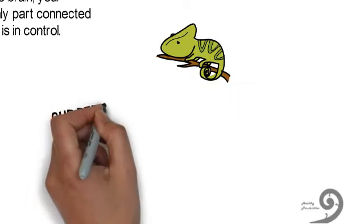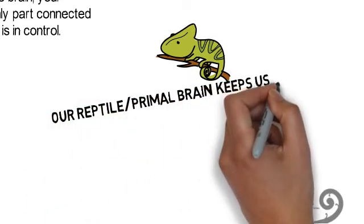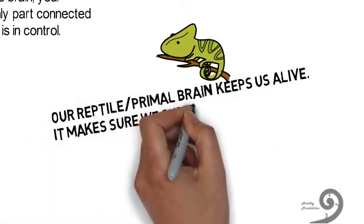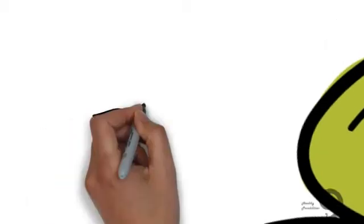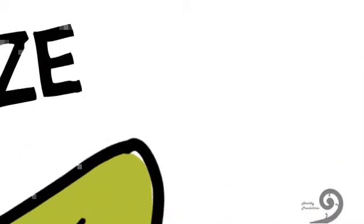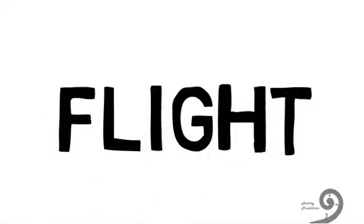Our reptile primal brain keeps us alive. It makes sure we survive by engaging in survival behaviors. These are flop, drop, freeze, flight, and fight.